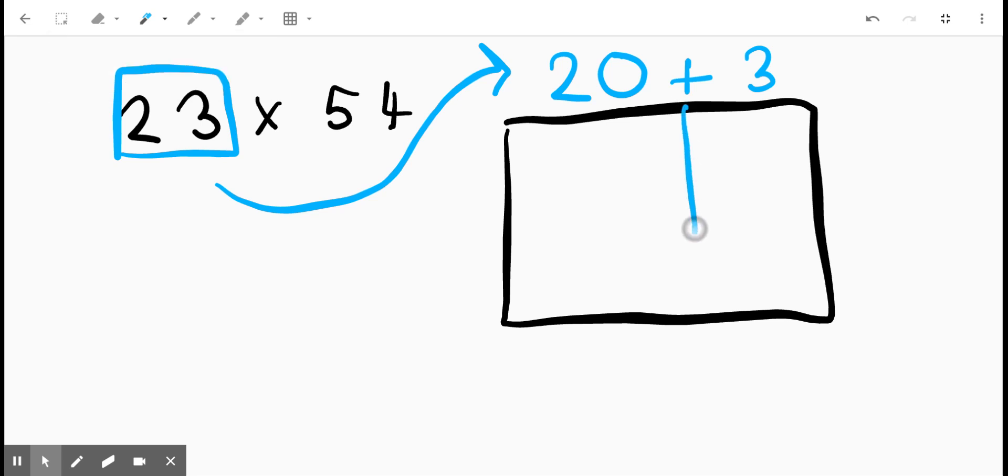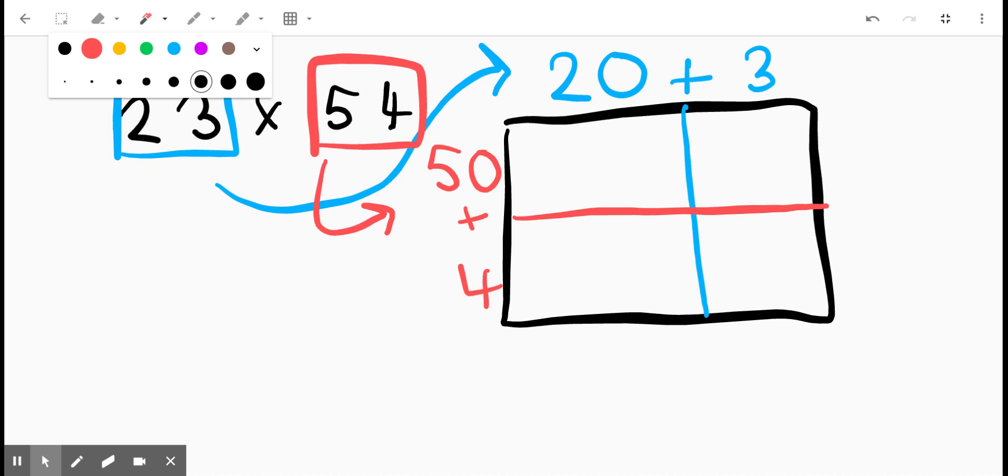Now I'm going to focus my attention on the other factor, which is 54. I'm going to write the expanded form of 54 off to the side here: 50 plus 4. Once again, I'm going to separate the 50 from the 4. Now you see we've created a rectangle that has four areas or four spaces.